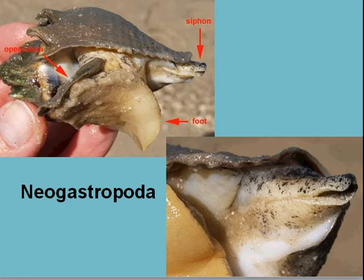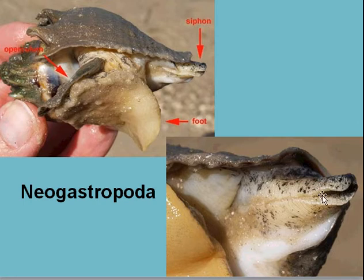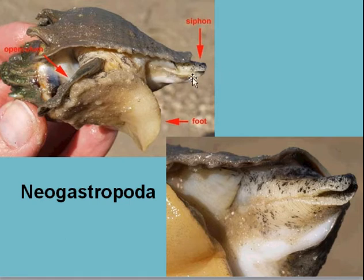Here's a neogastropod, and if you look at the shell and the animal, one of the main things you see is this thing called a siphon. You can see it is just a fold in the mantle tissue. If you look at it closely, you'll see that that fold allows for essentially a tube to be formed, and that tube is where water is sucked in — that's why it's called a siphon, just like if you siphon gas out of a car. Water is sucked in through this tube, which is a fold in the mantle.